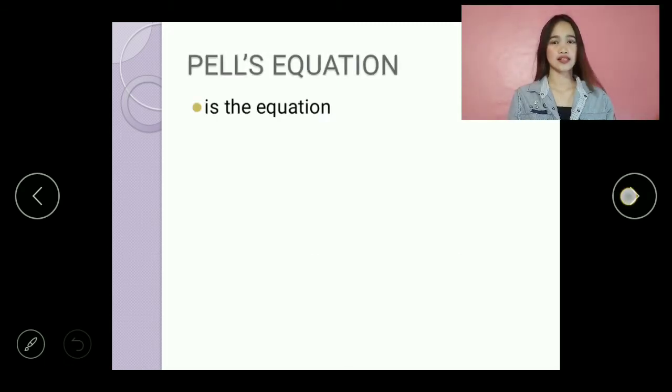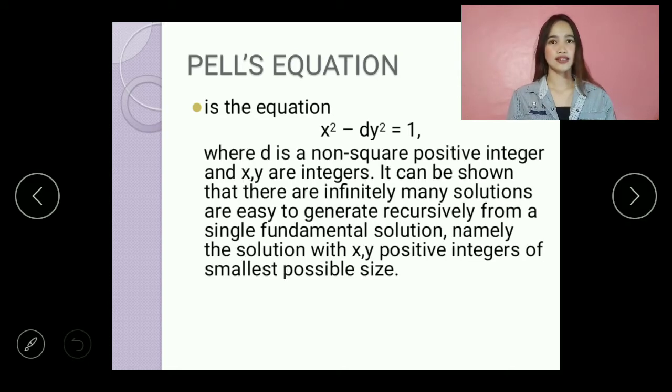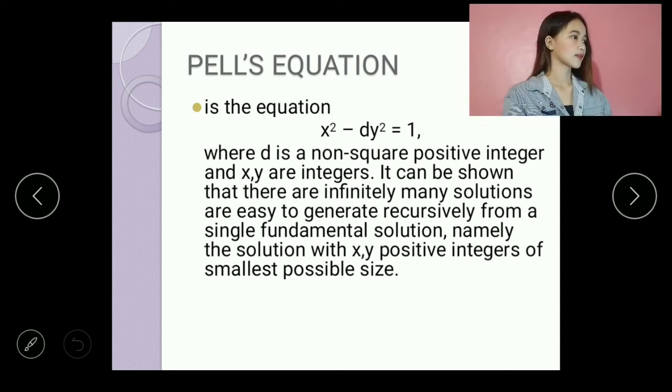Pell's Equation is the equation x squared minus dy squared equals 1, where d is a non-square positive integer, and x, y are integers. It can be shown that there are infinitely many solutions that are easy to generate recursively from a single fundamental solution, namely the solution with x, y positive integers of smallest possible size.